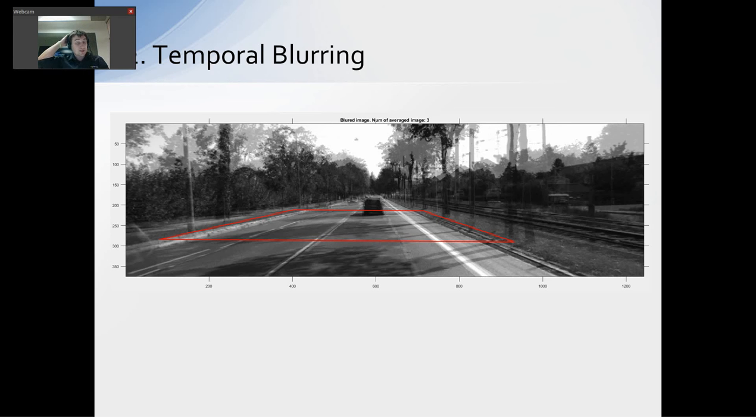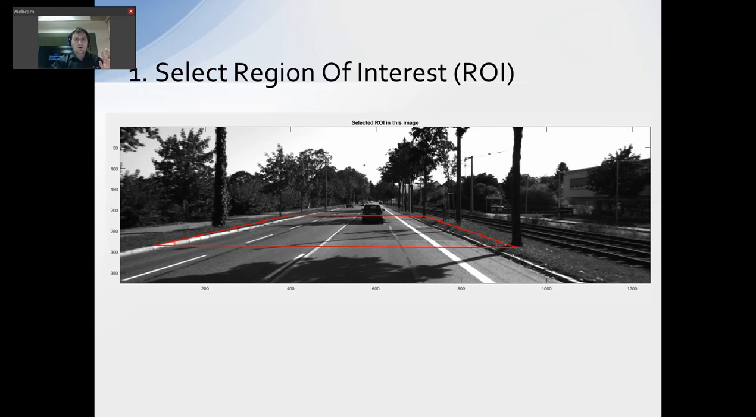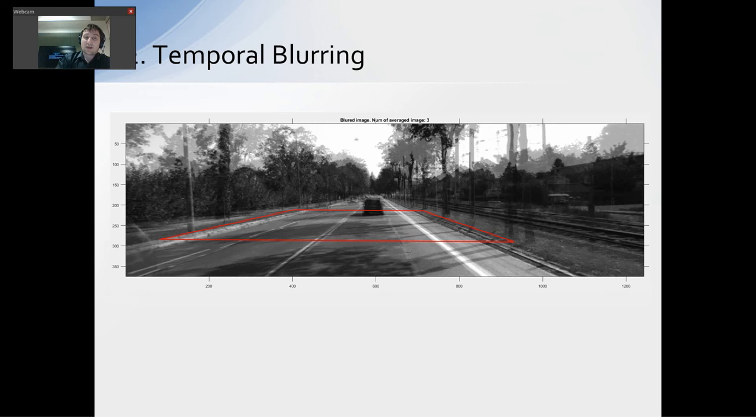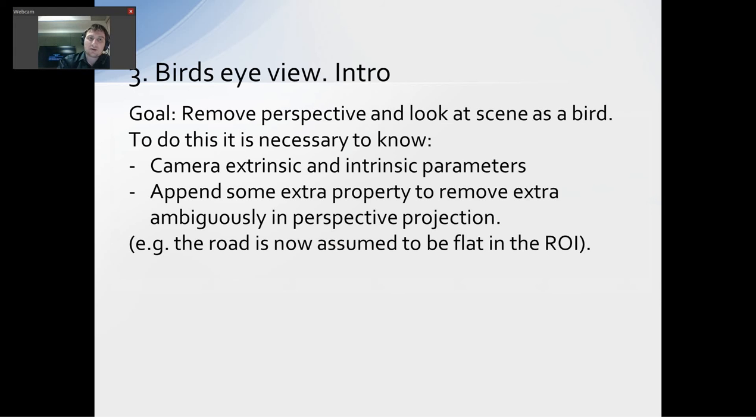Then, we use temporal blurring to average frames. We need to connect these white stripes, because originally they have some gaps. After blurring, we have a blurred image, but we also connected our lines, our stripes.